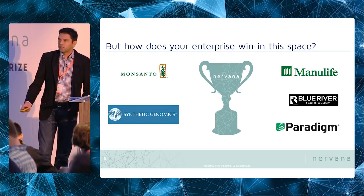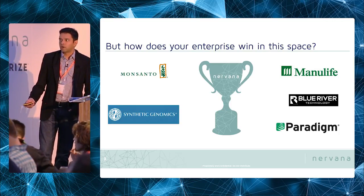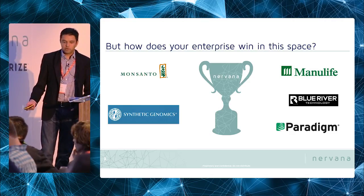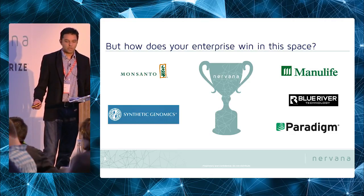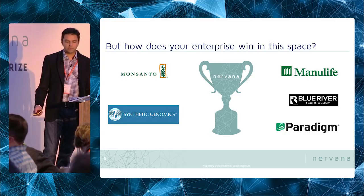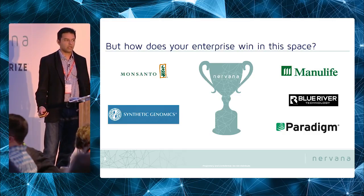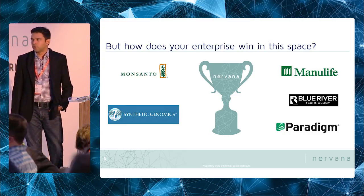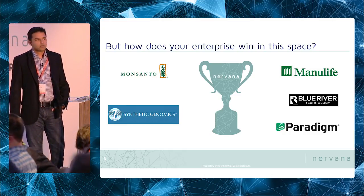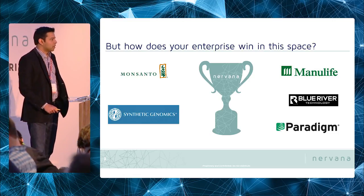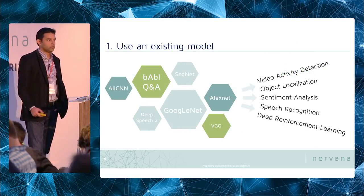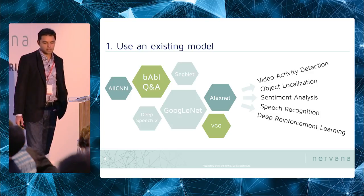Companies like Monsanto in the agriculture space, Blue River which is a startup in precision agriculture, Manulife which is a large financial company, and Paradigm which is an oil and gas software company. So across a bunch of different domains, how do you succeed in this space?